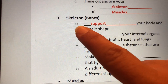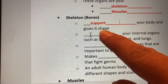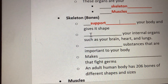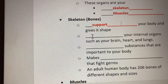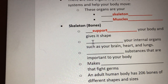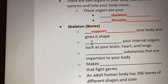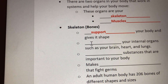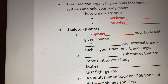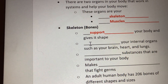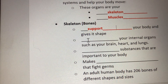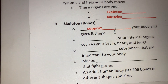When I say the skeleton gives you shape, I mean that every human body is made the same way — we each have two arms, two legs, and so on. We know what a human shape looks like, and that's what I mean by the skeleton giving you shape.